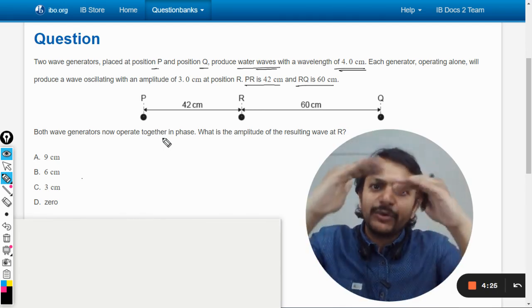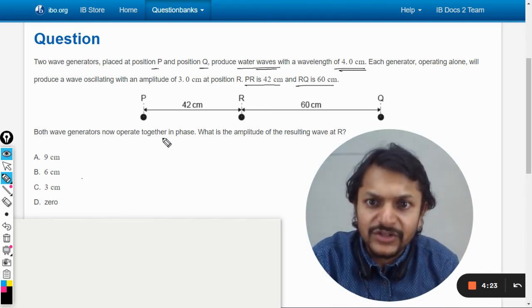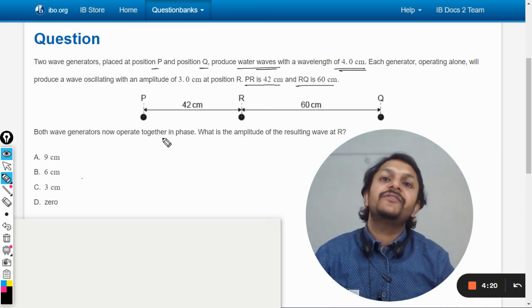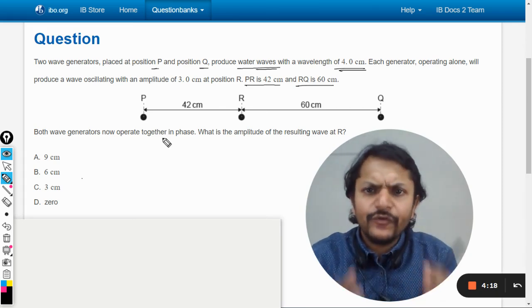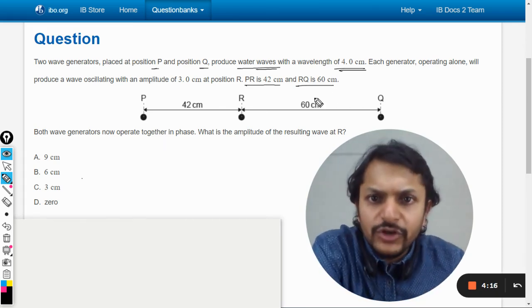Both wave generators now operate together in phase, so completely same waves are getting produced and they are in sync with each other. What is the amplitude of the resulting wave at R?